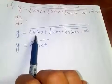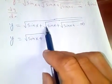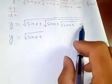Here we denote that y equals square root of sine x plus square root of sine x and so on. You see here again square root of sine x plus square root of sine x and so on up to infinity, which is y.